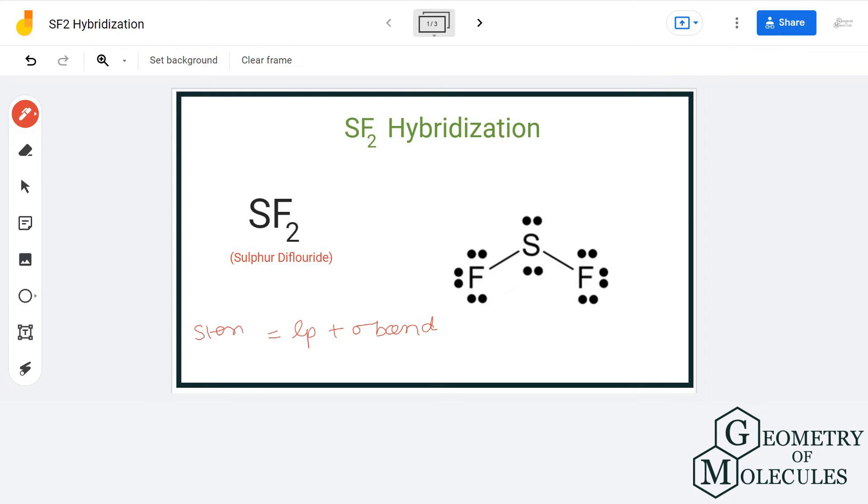This is known as steric number. In other words, steric number equals to the summation of sigma bonds and lone pairs attached to the central atom.